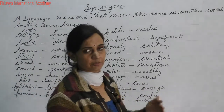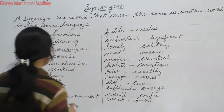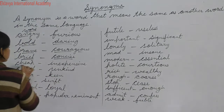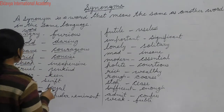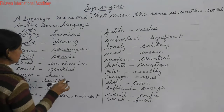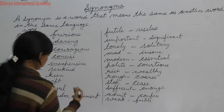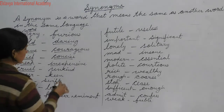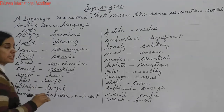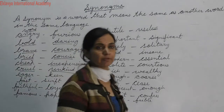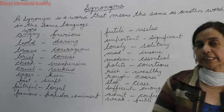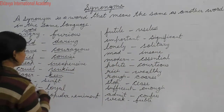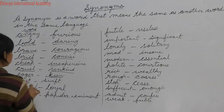Brief means short — aap bolte ho brief knowledge, that means short or concise knowledge, sankshipta. Cheap means sasta — inexpensive is another word for it. Cruel means jise bilkul daya nahi hoti, and unkind is its synonym. Eager means utsuk — to be eager or keen to do any work.